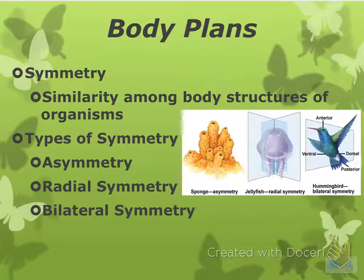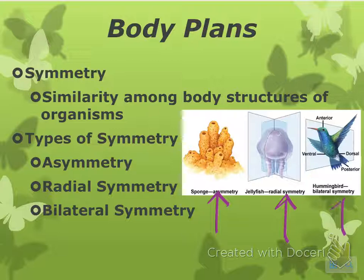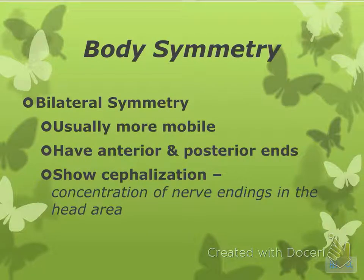Body plans — we have types of symmetry. You have asymmetry, like a sponge, which means no matter which way you cut it, it's not going to be equal on both sides. You have radial symmetry, like a jellyfish. And then you have bilateral. In terms of this, you always want to think about how you can divide it — if you cut this animal in half, could you have equal sides, or could you cut it in more than one way and have equal sides?